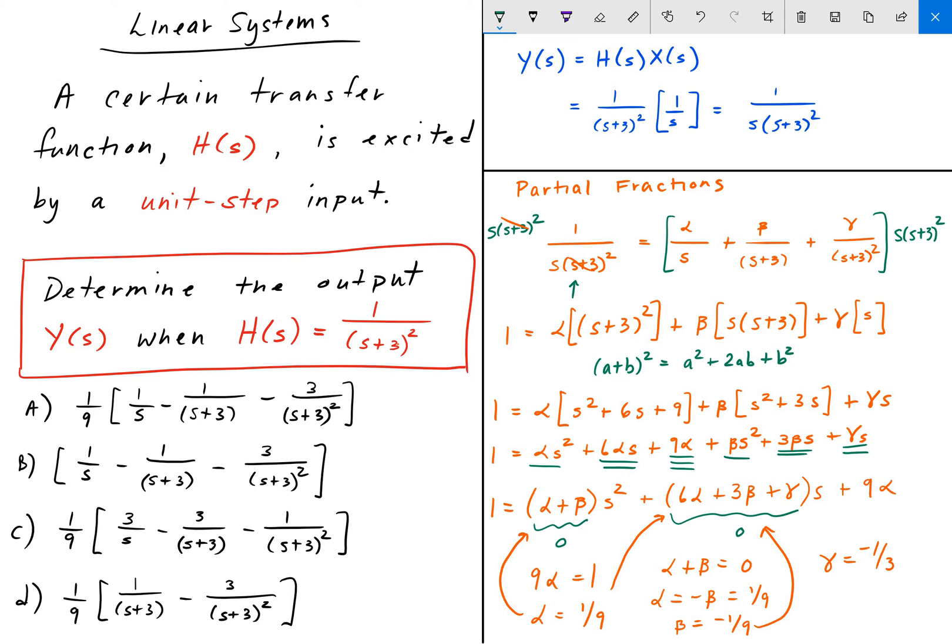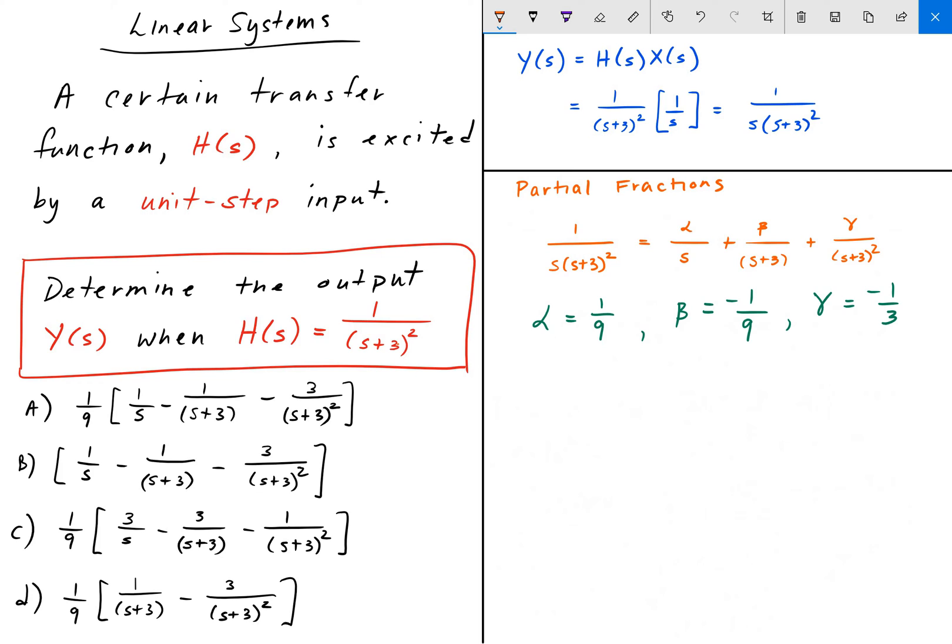Now that we know alpha, beta, and gamma, we can take all that, bring it right back to the top, and plug it into our original equation, and finally expand this 1 over s(s+3)². So I'm going to erase all this and just write the constants that we just found. Okay, so here I've rewritten it. Alpha is 1/9, beta is minus 1/9, and gamma is minus 1/3.